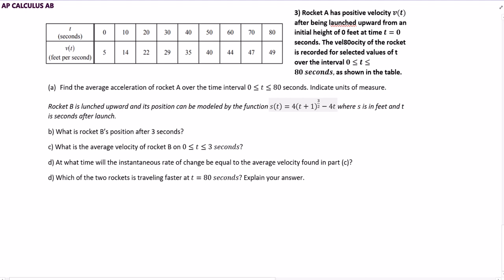All right, here we are on number three of our FRQs. It's talking about a rocket which has positive velocity V(t) after being launched upward from an initial height of zero feet at time equals zero seconds. The velocity of the rocket is recorded for selected values of T over the interval 0 < T < 80 seconds as shown in the table. So let's just reflect real quick. What are we given?